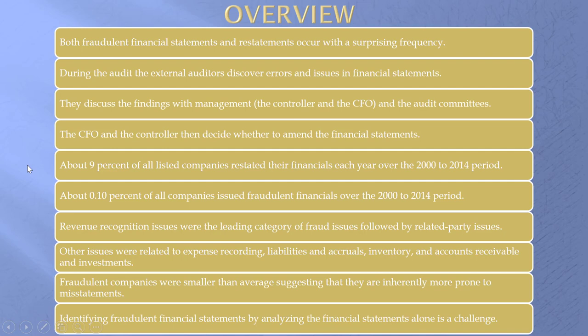We might have more errors being discovered, but they are not made public through restatements — they would simply be a small correction applied in the current year without restating the prior year. A small percentage, 0.1% of all companies, issued fraudulent financial statements. Revenue recognition is tightly aligned with fraudulent financials. Other targets were expense recording, liabilities, inventory, accounts receivable, and investments.